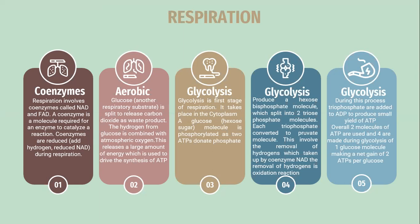Glycolysis is the first stage of respiration. It takes place in the cytoplasm, where a glucose hexose sugar molecule is phosphorylated as two ATP donate phosphate groups. It produces a hexose bisphosphate molecule which is split into two triose phosphate molecules. Each triose phosphate is converted to a pyruvate molecule, involving the removal of hydrogen which is taken up by coenzyme NAD — this removal of hydrogen is an oxidation reaction. Phosphate is added to ADP to produce more ATP. Overall, two molecules of ATP are used and four are made during glycolysis of one glucose molecule, making a net gain of two ATP per glucose.